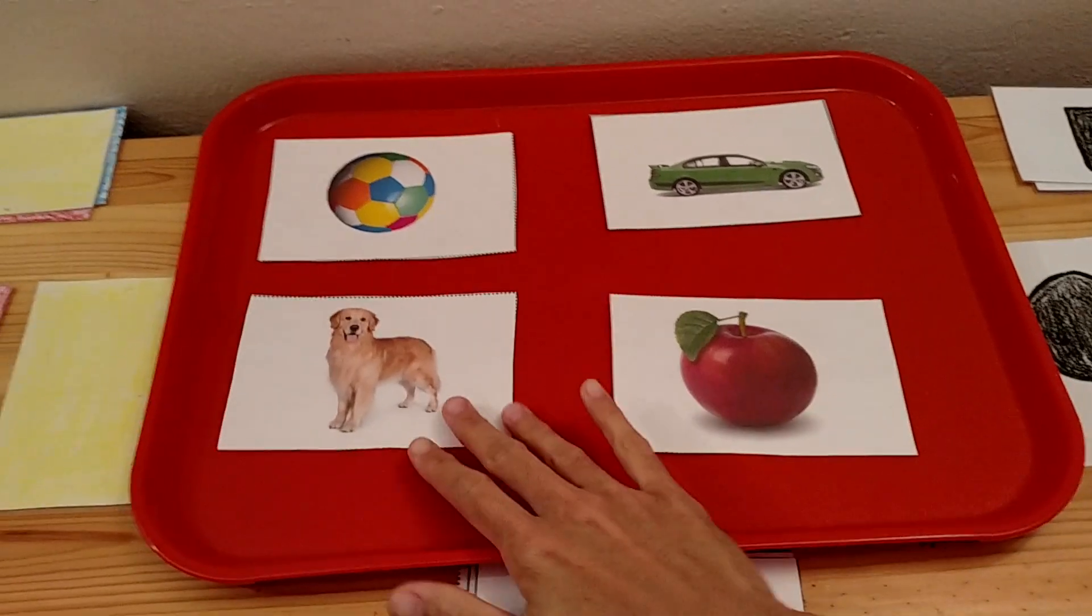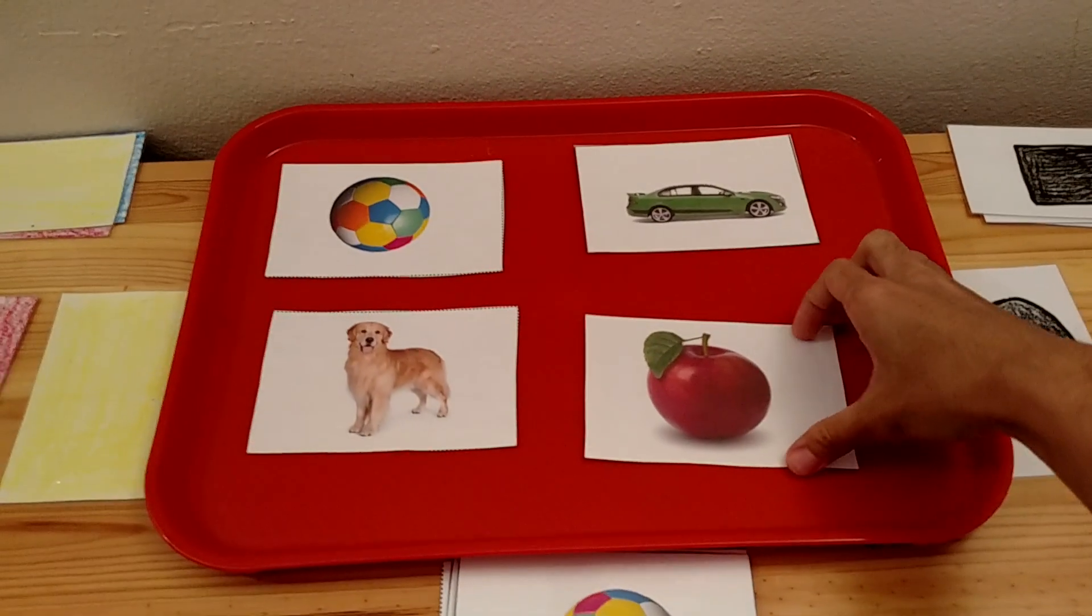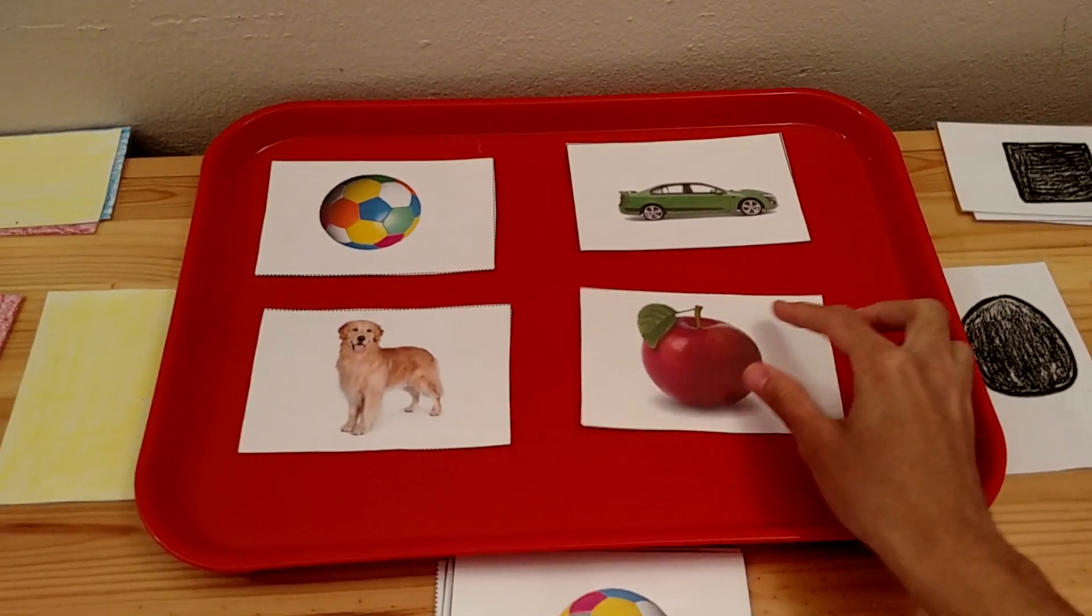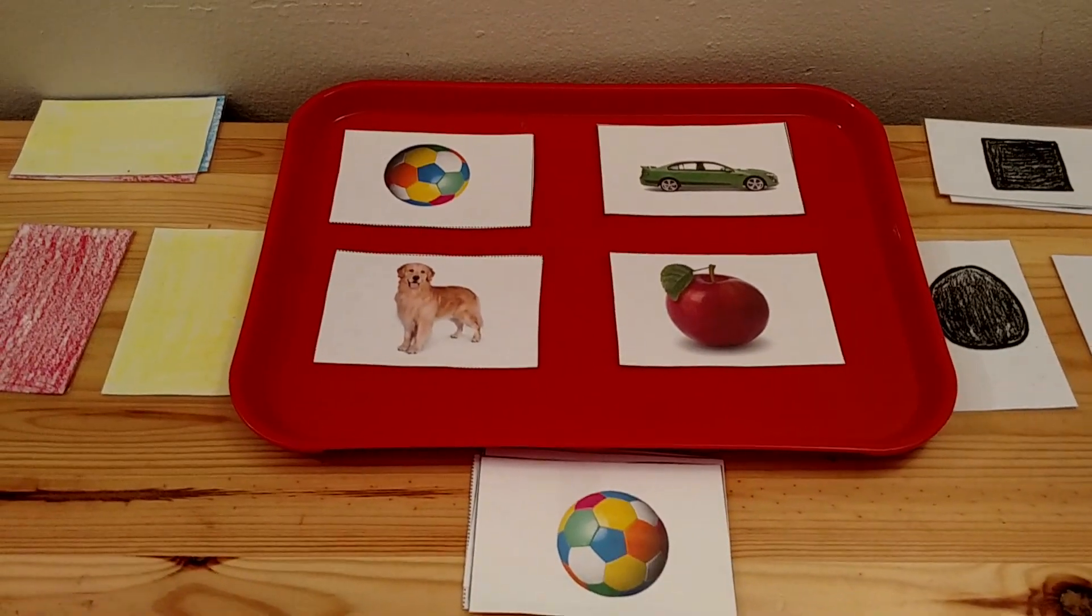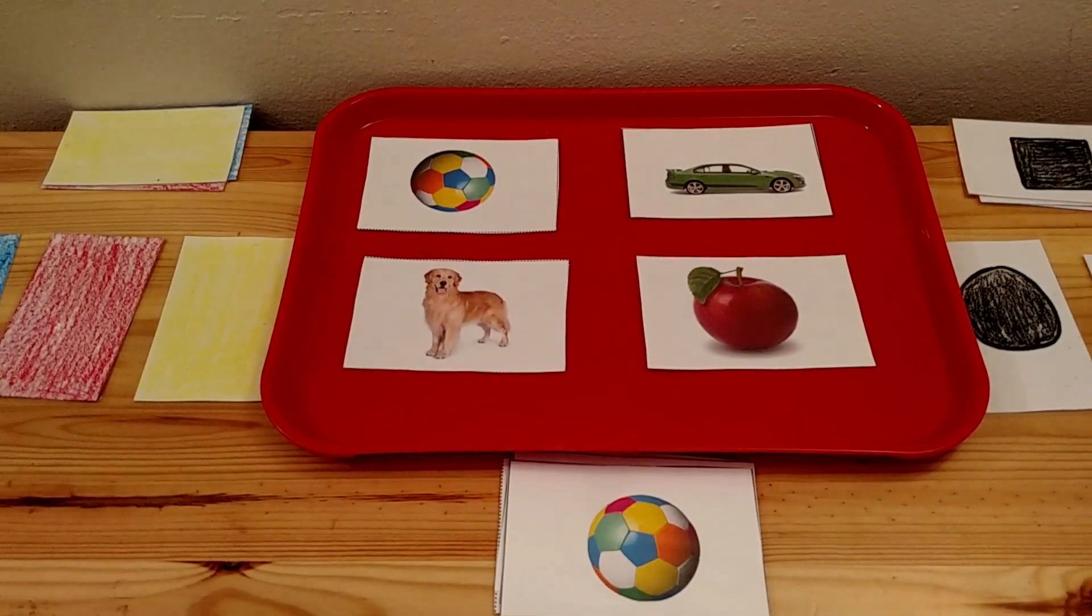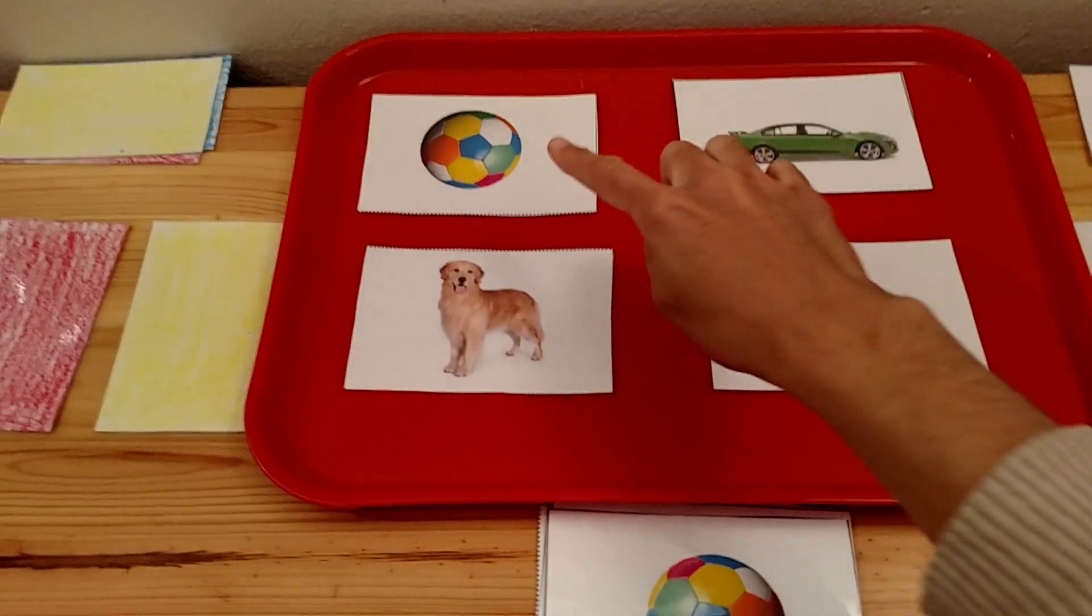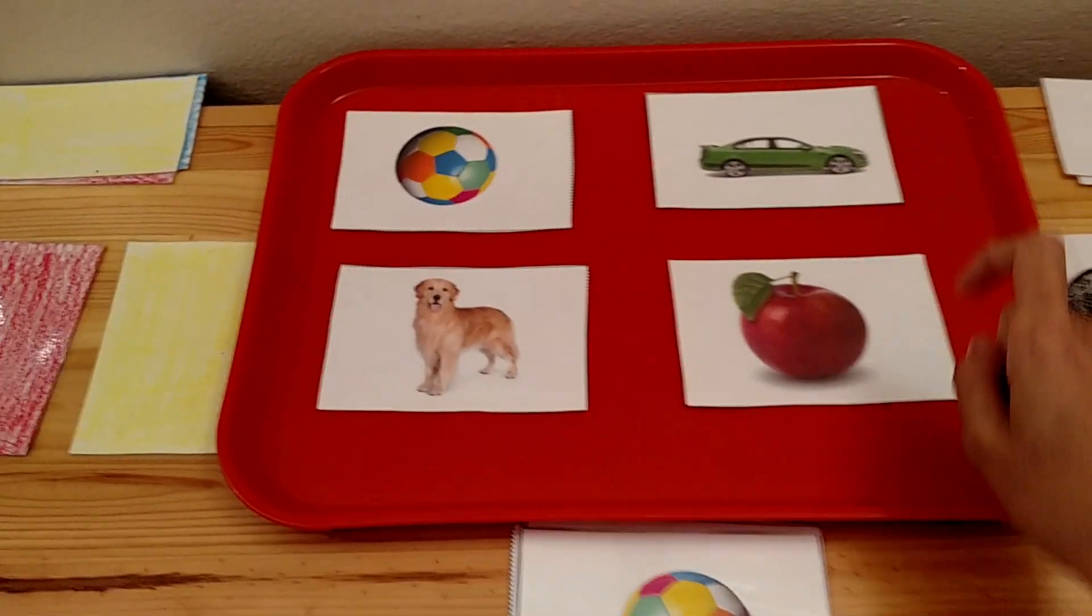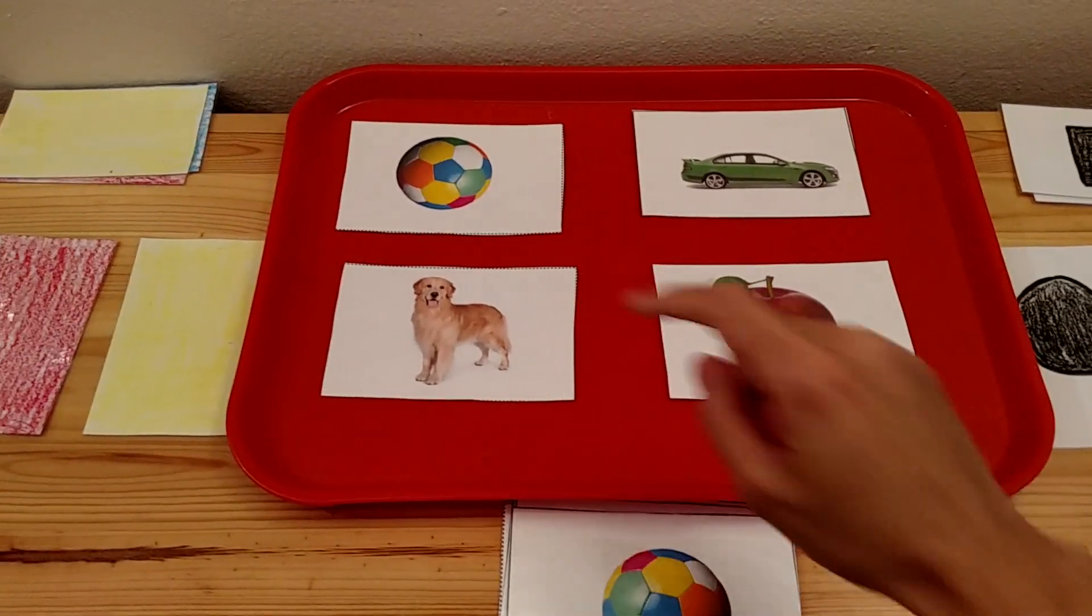So you would lay out the cards, and these cards are laminated. You can get these cards for free on my blog. I will post a link on the description box. And you want to start telling the child the names of the items on the cards. Ball. Car. Apple. Dog.